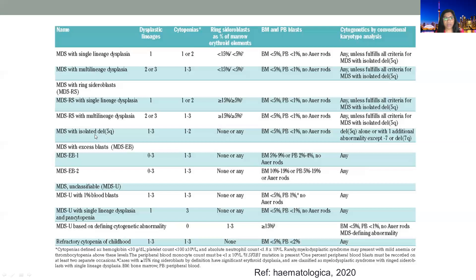MDS with isolated deletion 5q is a good prognostic category. These patients can have dysplasia in one to three lineages and one or two types of cytopenias. Bone marrow blasts are less than 5% without any Auer rods. The 5q deletion can be an isolated abnormality alone or can have one additional anomaly, but without any deletion 7q.